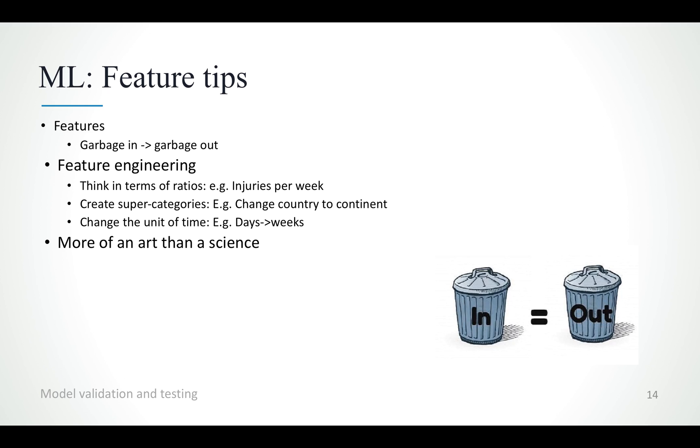Now, let's move on to some tips regarding the features we use. Feature is basically machine learning and data mining terminology for covariate in statistics or input variables. The most important thing to remember is the garbage in garbage out principle. If your features are not good, then you're never going to build a good model.